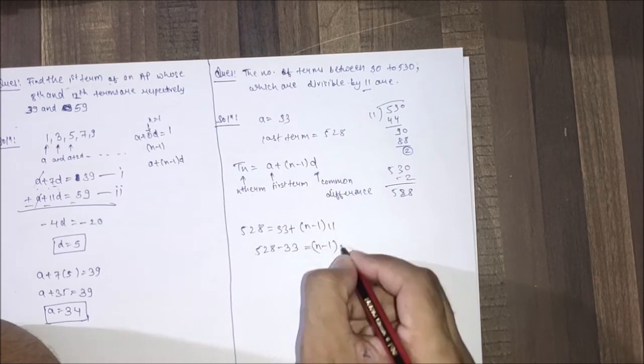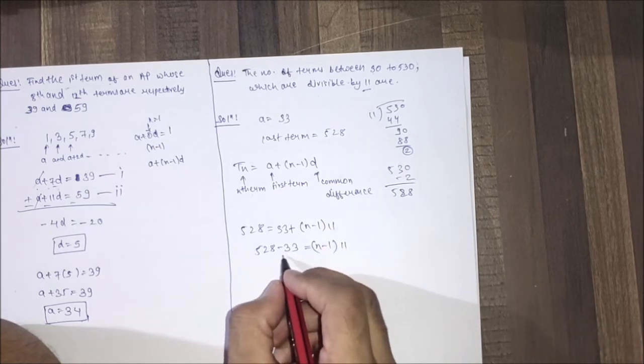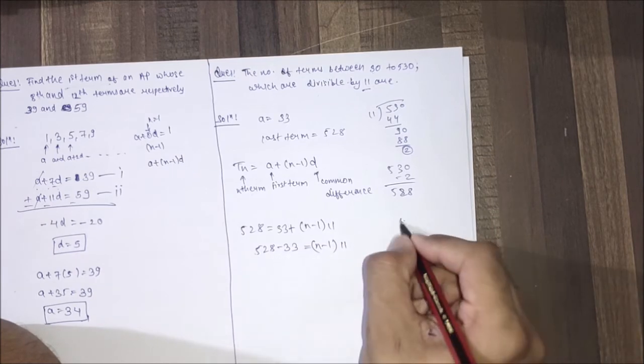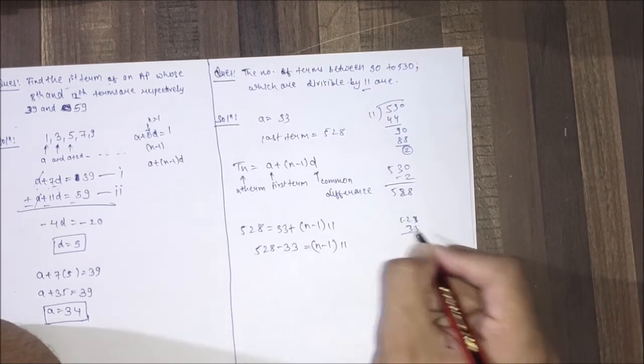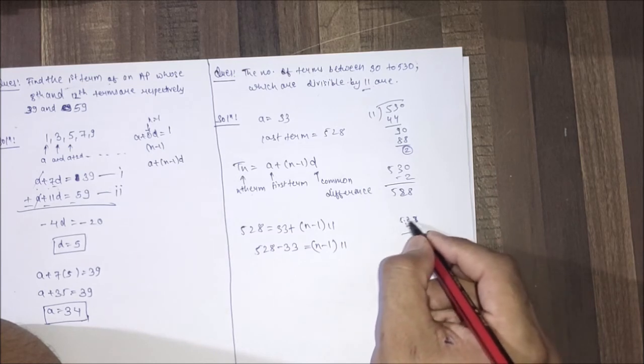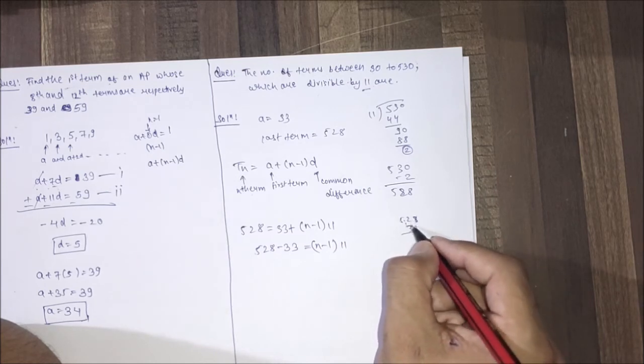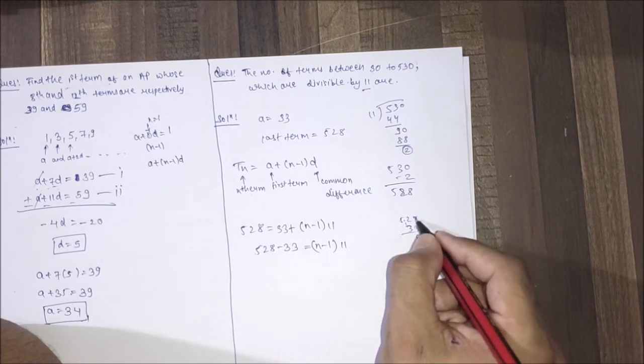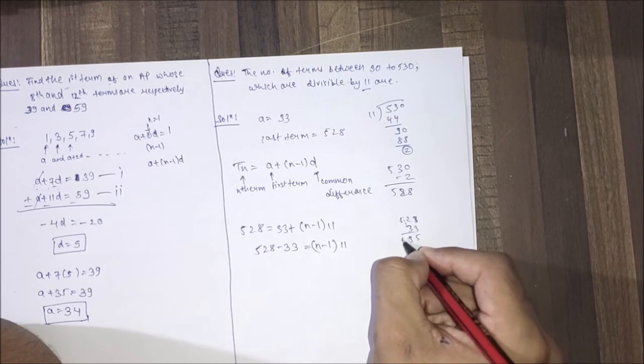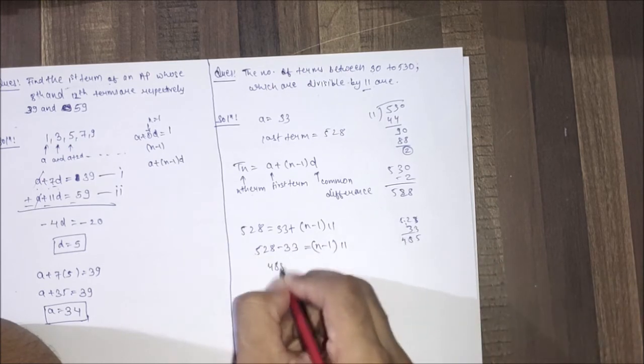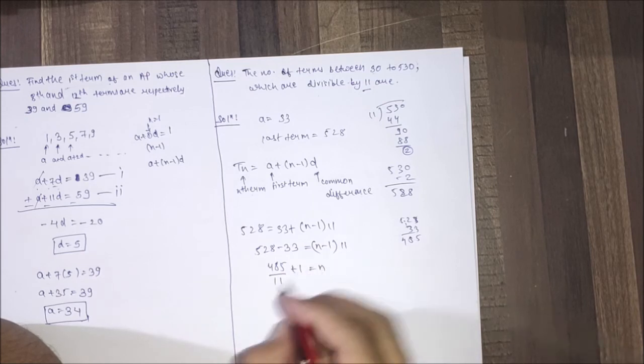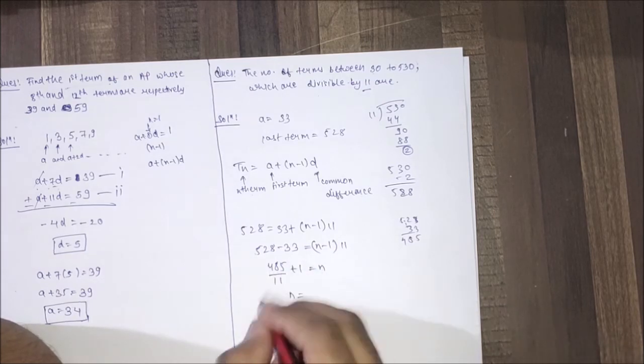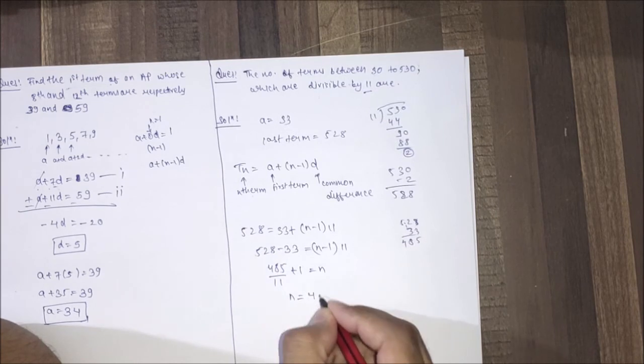528 minus 33 equals (n-1) multiplied by 11. 528 minus 33 equals 495. So 495 divided by 11 plus 1 equals n. When we divide it, n will equal 46.